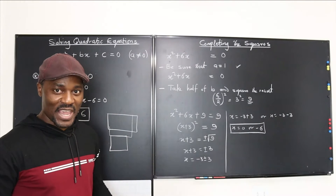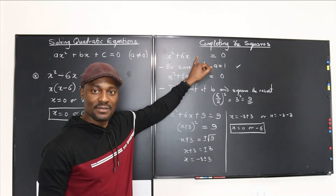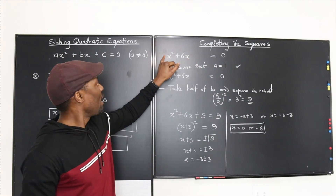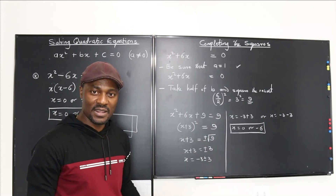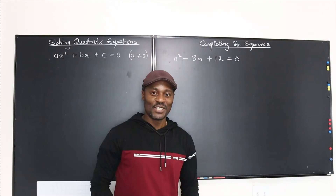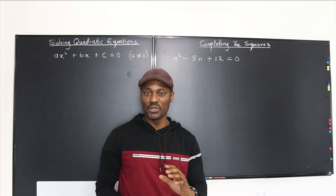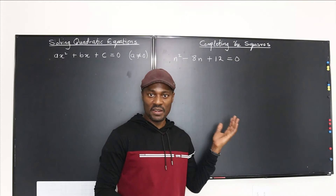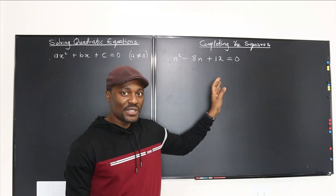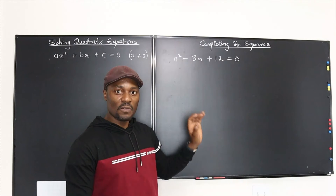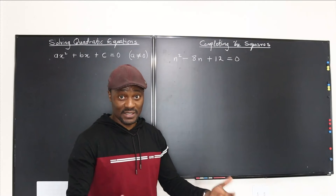The only things that will differ in the next two examples are that you'll have a constant c term present, or a will not be 1. Those are the extra steps you need to take. There's no point using completing the square if you know you can factor — I'm using these examples so you can verify the answers both ways.